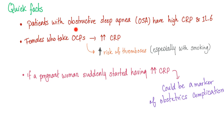Quick facts: patients with obstructive sleep apnea have high CRP and interleukin-6. Females who take oral contraceptive pills have high CRP levels and increased risk of thrombosis and cardiovascular events, especially with smoking. If you are taking oral contraceptive pills and smoking at the same time, you are asking for a thrombus — don't mix those two together. If a pregnant woman suddenly has high CRP during pregnancy, it could be a marker of an obstetric complication, though CRP is very non-specific.